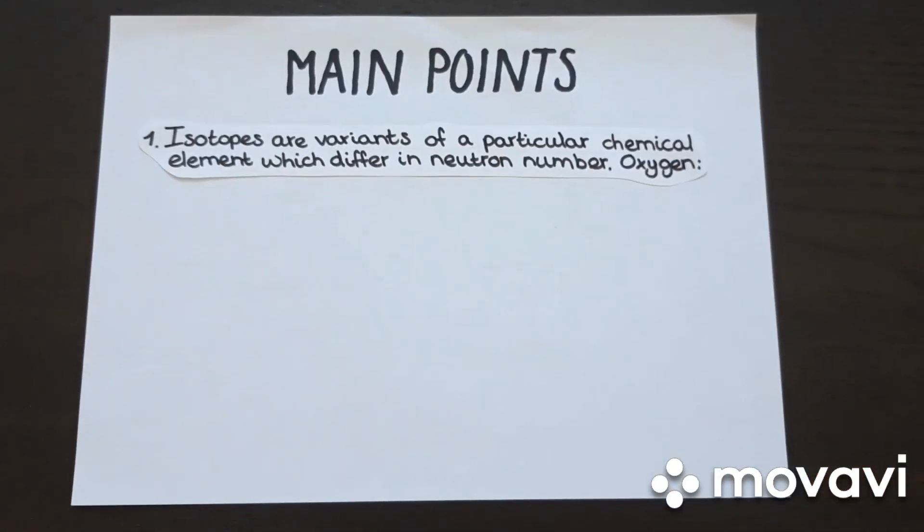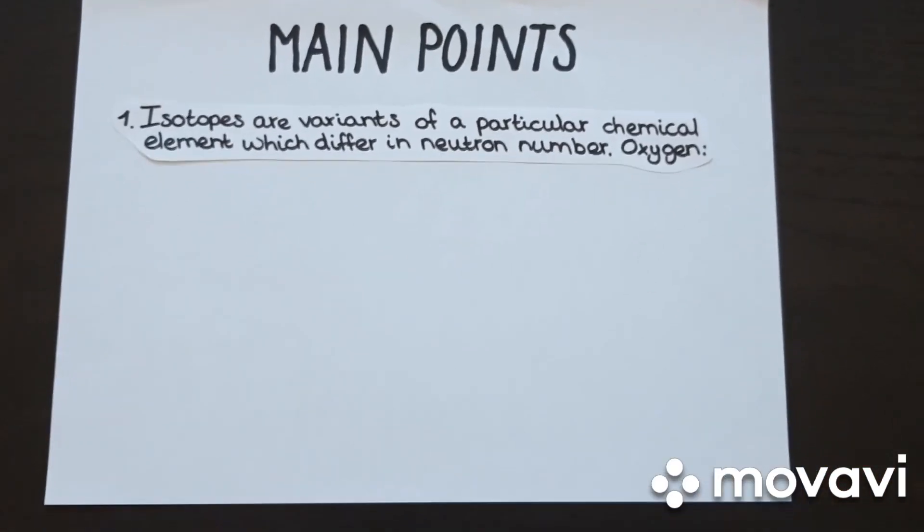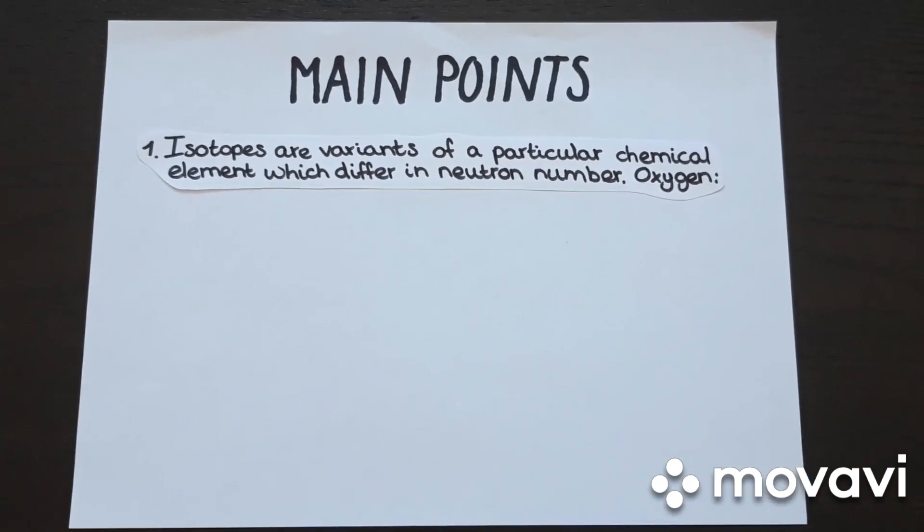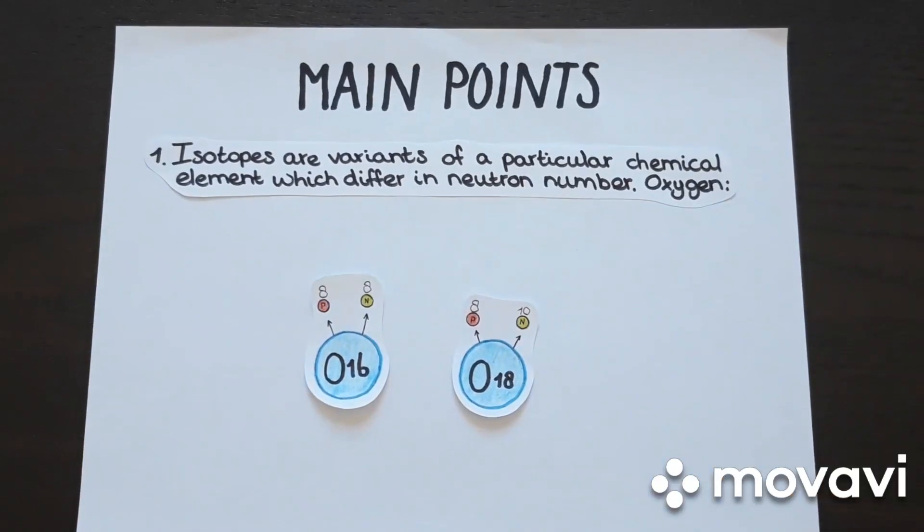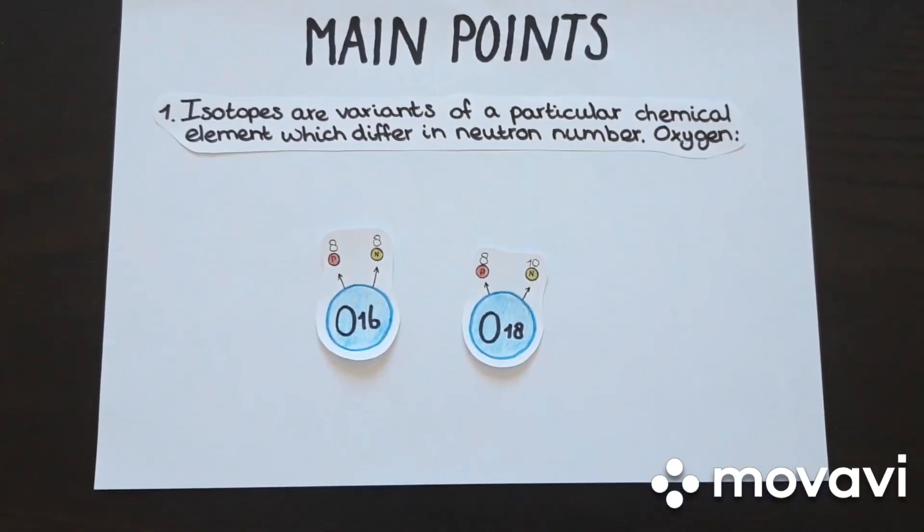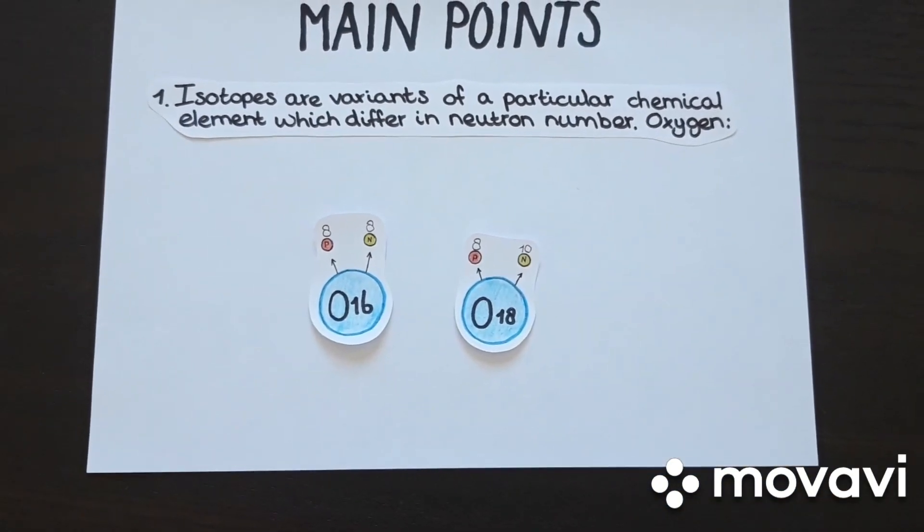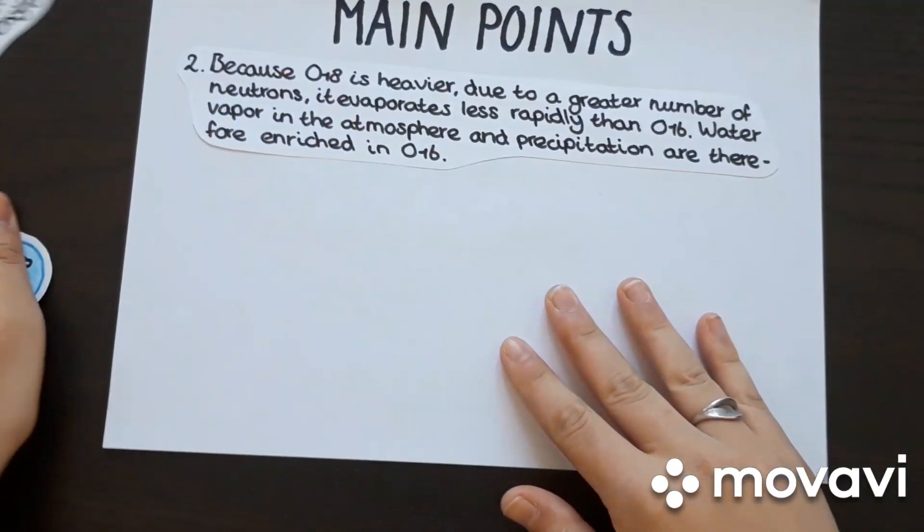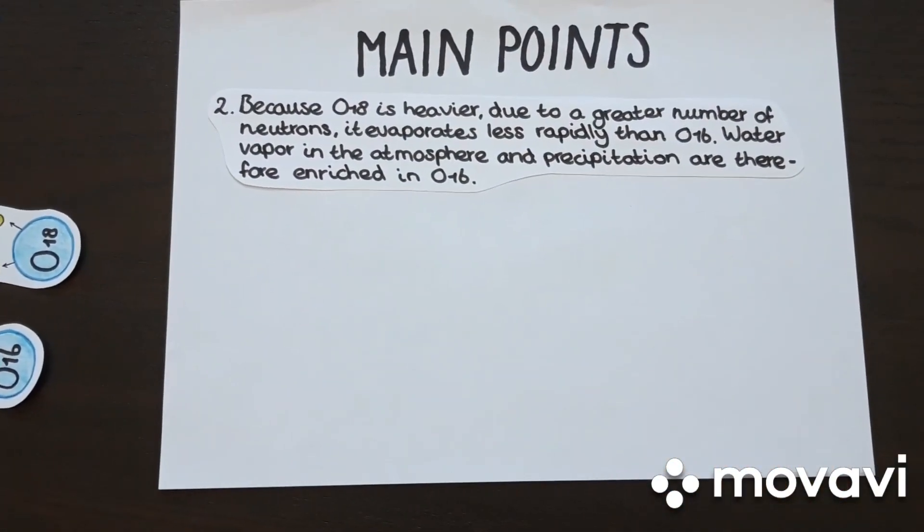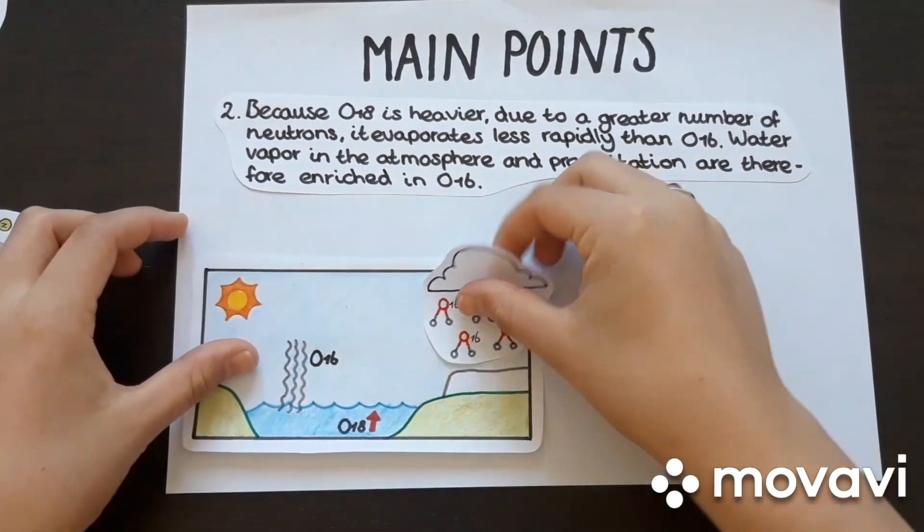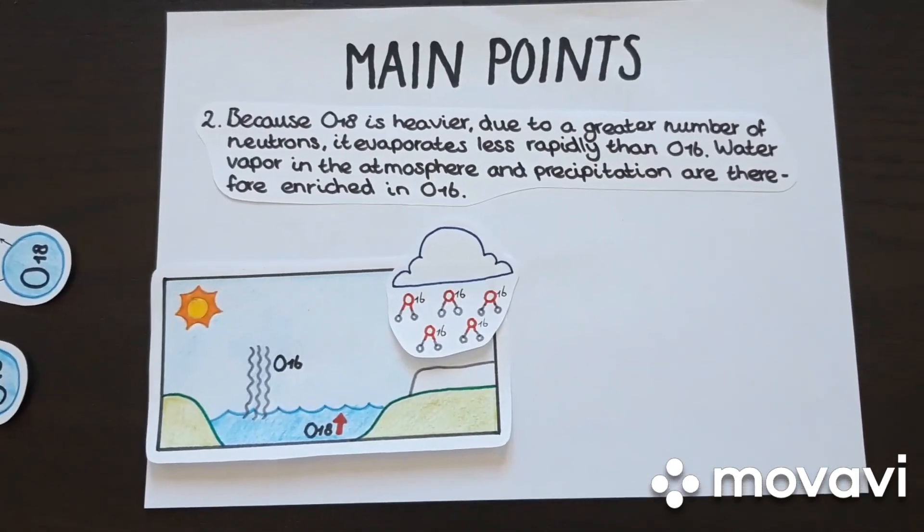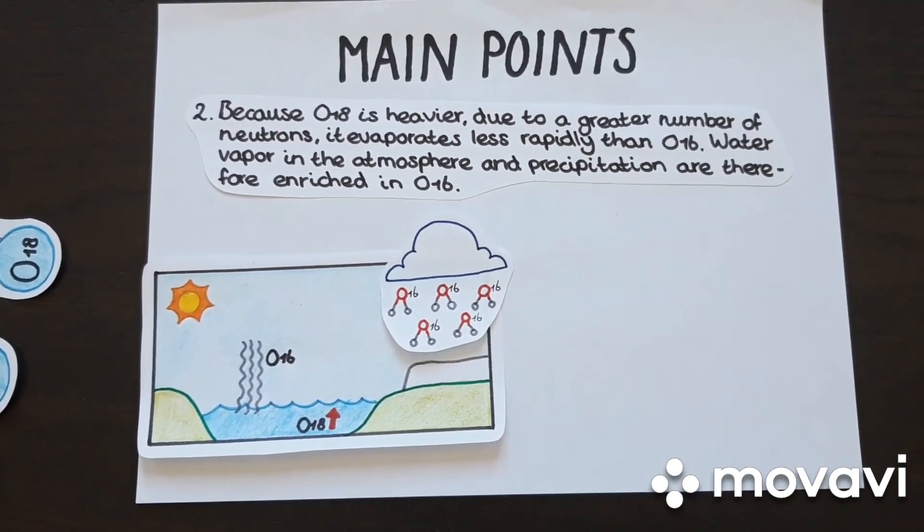The main points of this video are: 1. Isotopes are variants of a particular chemical element which differ in neutron number. The most important isotopes of oxygen to determine temperature in the past are O16 and O18. 2. Because O18 is heavier due to a greater number of neutrons, it evaporates less rapidly than O16. Water vapor in the atmosphere and precipitation are therefore enriched in O16.